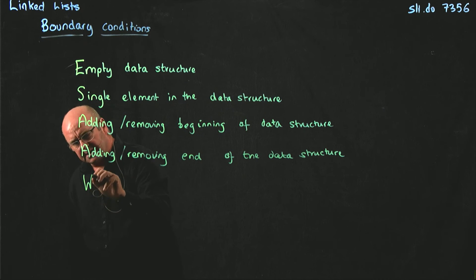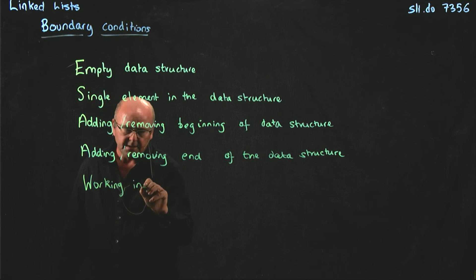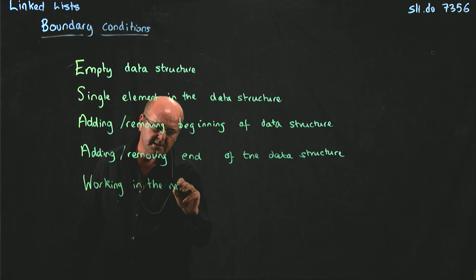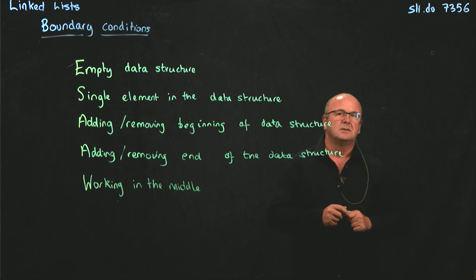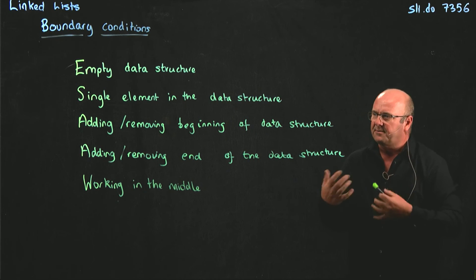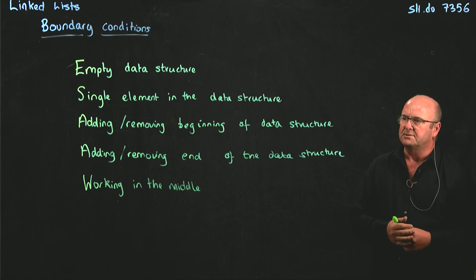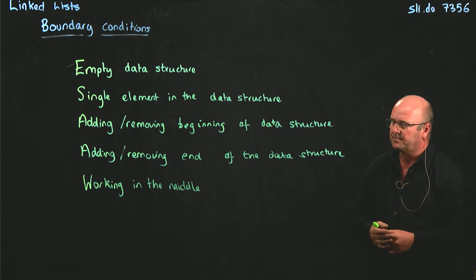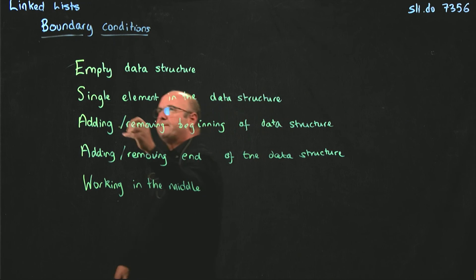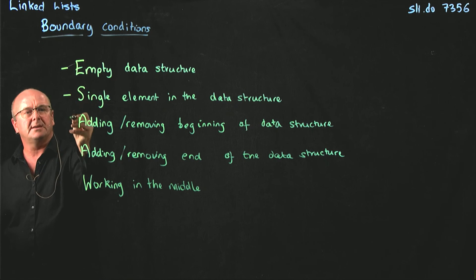And then the final case is just working in the middle. This tends to be the most trivial case because that's the one where we're kind of thinking about it. That's the one that we're going to do most operations on. So these five boundary conditions are really important.